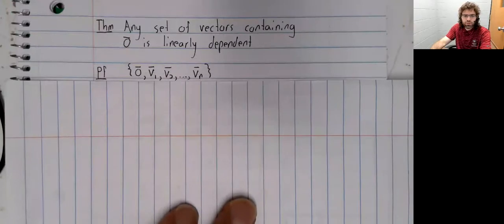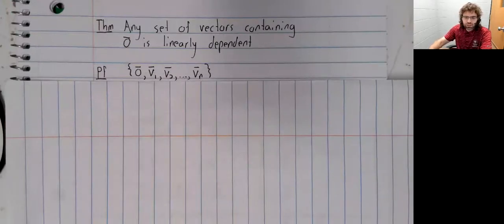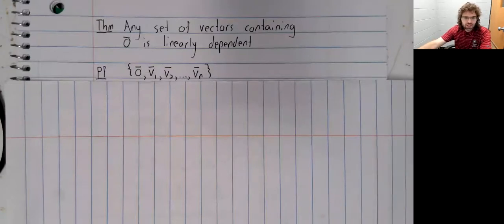And we can prove that. Let's look at a set of vectors containing the zero vector, and show that it's linearly dependent.